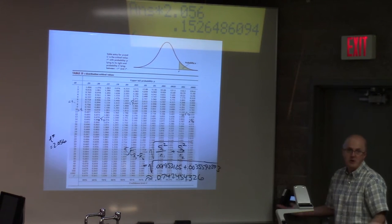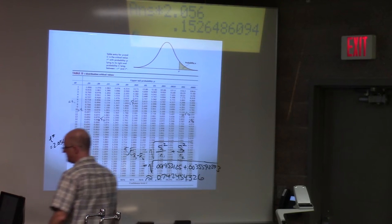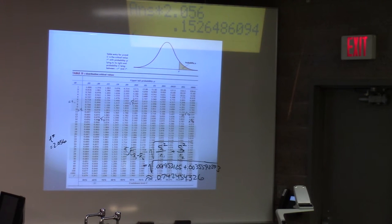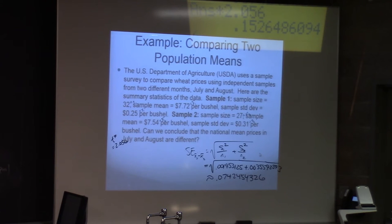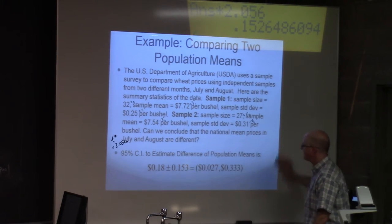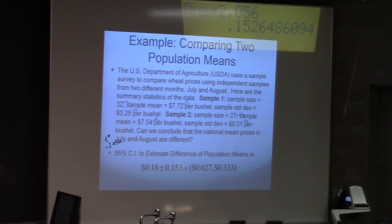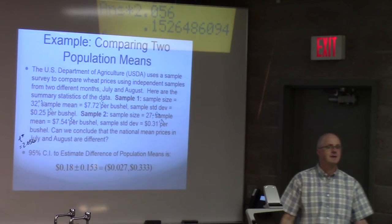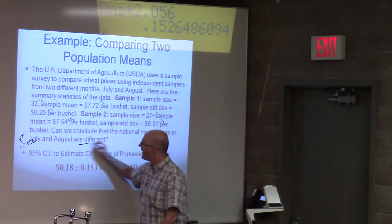That's what we multiply the standard error by to get the margin of error. 0.15, maybe 0.153 in dollars would be our margin of error. The confidence interval could be written like this. It doesn't contain zero. That's the most important thing about it. It's all positive numbers. So, we've got good evidence based on this confidence interval that the mean prices are different.